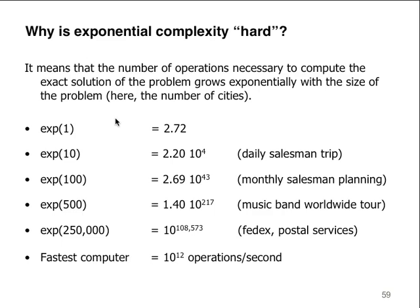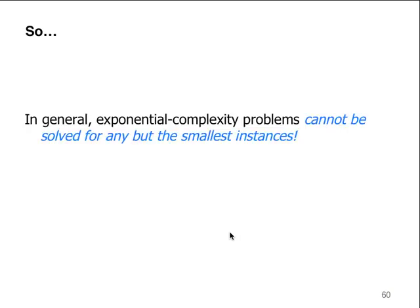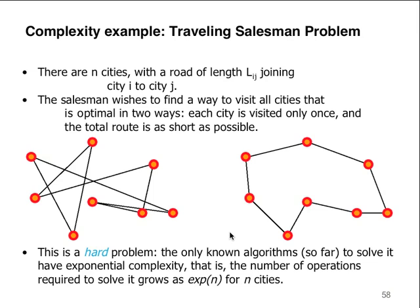Exponential complexity hard by definition means the number of operations necessary to compute the exact solution grows exponentially with the size of the problem. This is why you cannot apply traditional computer science algorithms to AI solutions — not feasible. If you do that, you're looking at a program that never comes back with an answer, a GPS program that's not going to work. One of the best solutions to this is a genetic algorithm. I'll show you that technique, and you'll see how complex that is — but compared to exponential complexity, it's nothing.